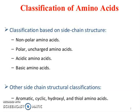Classification of amino acids is based on side chain structure. The categories are: non-polar amino acids, polar or uncharged amino acids, acidic amino acids, and basic amino acids. Other side chain structure classifications include aromatic, cyclic, and hydroxyl and thiol amino acids.